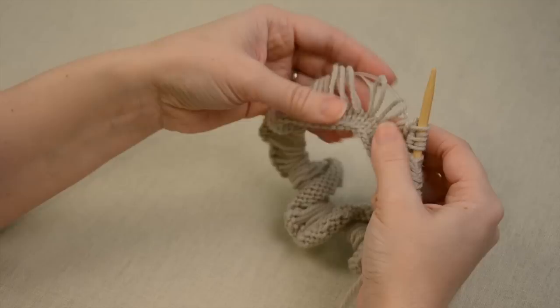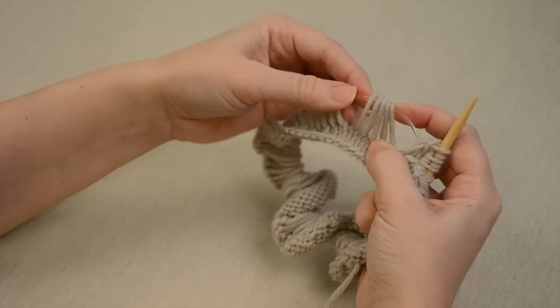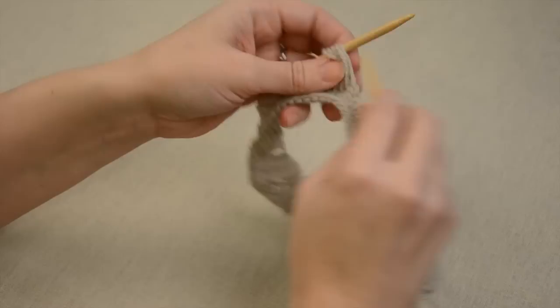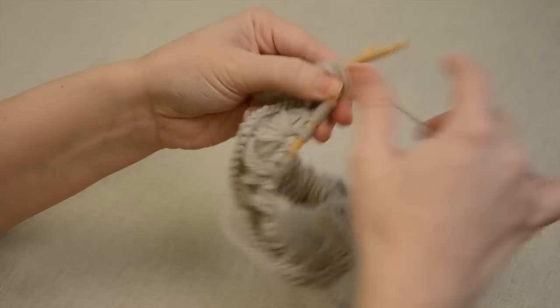And the way we're going to do that is we're going to knit through five stitches at a time, with five loops. So count your five stitches, insert your needle as if to knit through all five stitches.